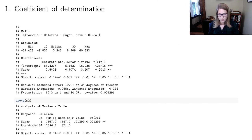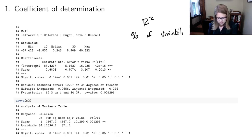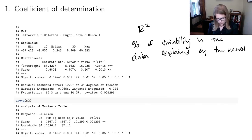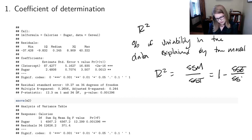Let's start with the coefficient of determination piece. R squared is the percent of variability in the data explained by the model. We have an equation for it: R squared equals SSM over SST, or it could be one minus SSE over SST.